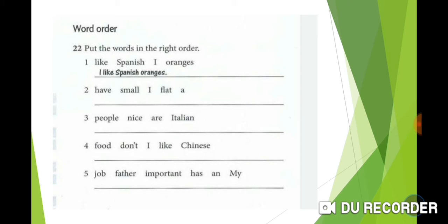Spanish oranges is the object, and the adjective comes before the noun, so it becomes: I like Spanish oranges. Number 2: Have small I flat A. The subject is I, the verb is have, the indefinite article A comes before the noun, and the adjective small comes before the noun, then the object flat. The sentence becomes: I have a small flat.